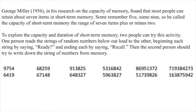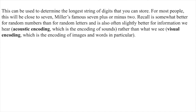George Miller, in 1956, found that most people can retain about seven items in short-term memory — some remember five, some nine — so he called the capacity of short-term memory the range of seven plus or minus two. To explore this, one person reads strings of random numbers aloud to another, and the second person tries to write them down from memory, determining the longest string they can store. For most people this will be close to seven. Recall is also often slightly better for information we hear — acoustic encoding, the encoding of sounds — rather than what we see — visual encoding, the encoding of images and words.